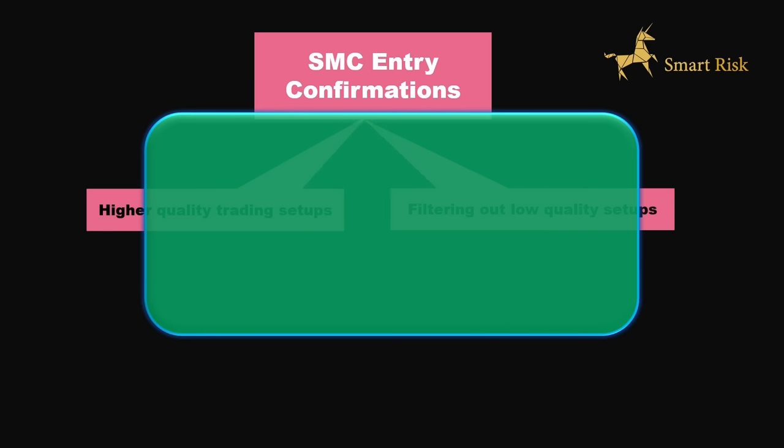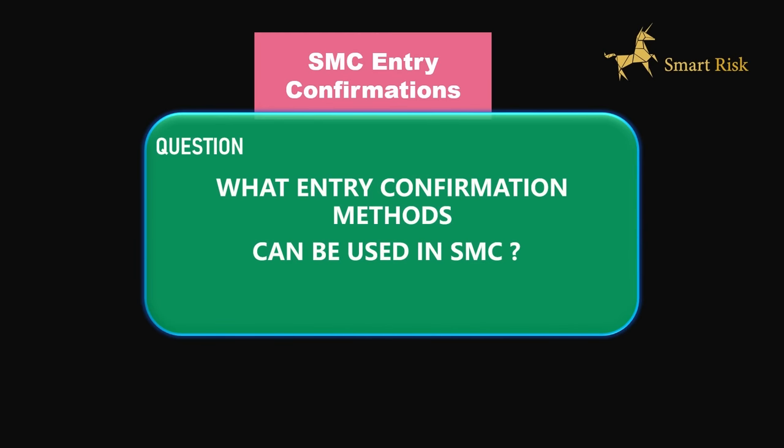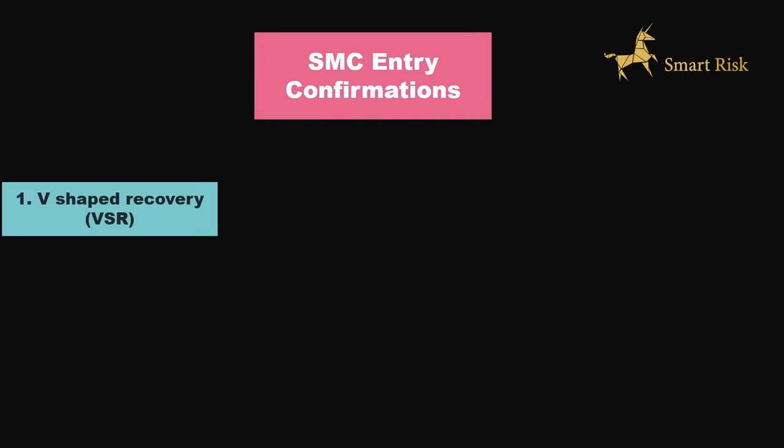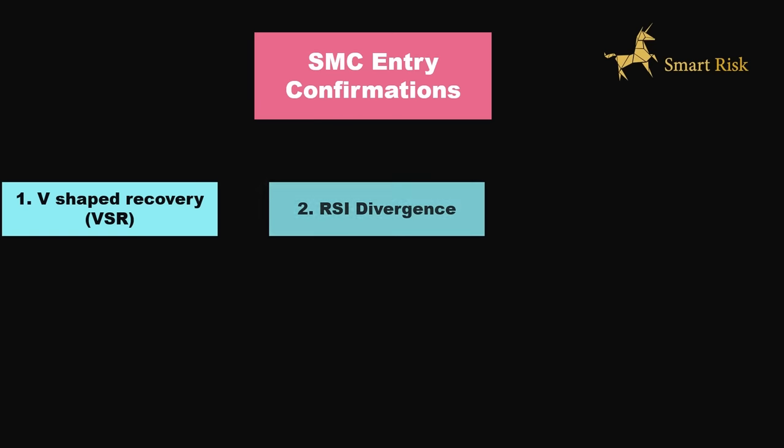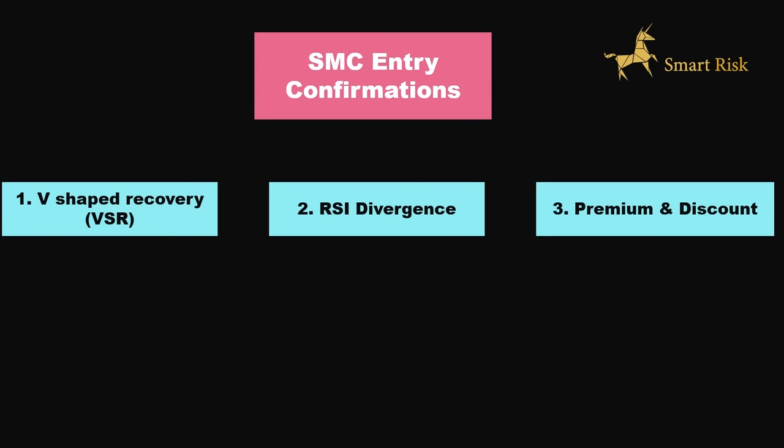What are the possible forms of entry confirmations that can be utilized within the smart money trading strategy? V-shaped recovery, RSI divergence, and premium and discount zone. Using each one of these in our trading can help increase the accuracy and effectiveness of our trading decisions, which enhances profitability and reduces risk exposure. So let's dive deeper into this topic and explore how we can effectively use entry confirmations in executing trades.